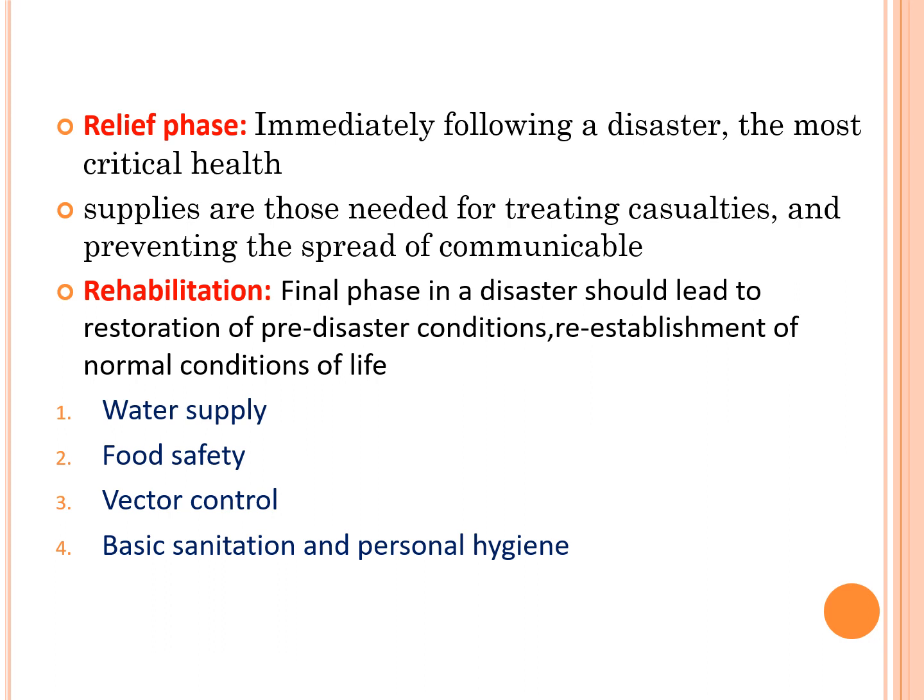Following a disaster, overcrowding and population displacement may lead to communicable diseases. People coming in contact with animals may lead to zoonotic diseases emerging. There will also be lack of food and contaminated water. The disaster cycle follows: response, relief phase, then rehabilitation.